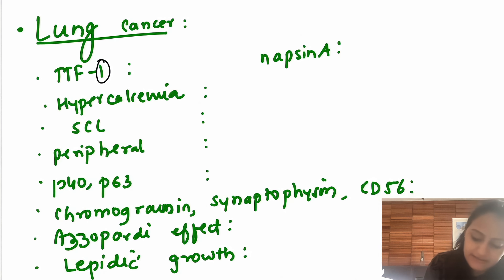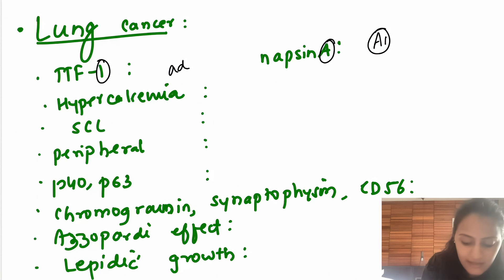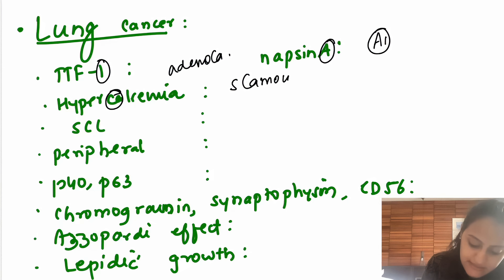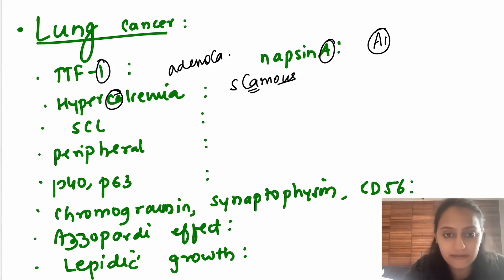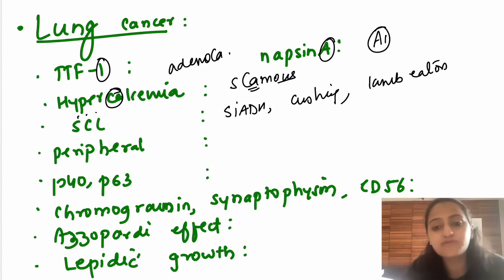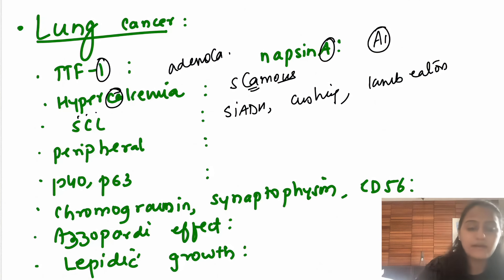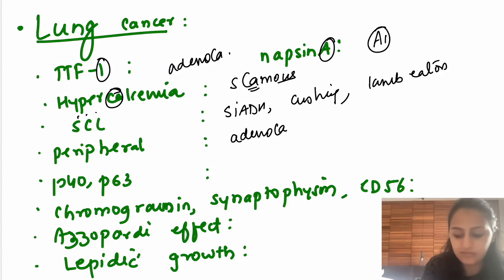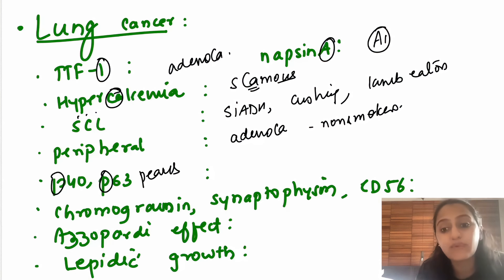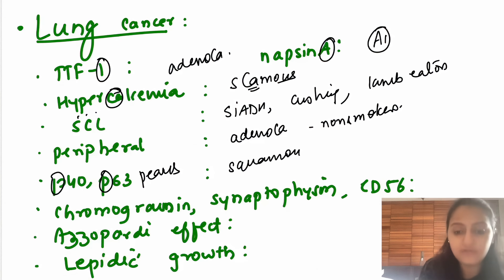For lung cancer: TTF-1 and Napsin A are positive for adenocarcinoma. Hypercalcemia is seen in squamous cell carcinoma of the lungs. Small cell lung cancer (SCLC) is associated with SIADH, Cushing's syndrome, and Lambert-Eaton syndrome — these are paraneoplastic syndromes. Remember squamous cell and small cell are central; adenocarcinoma is peripheral and more common in non-smokers. P40 and P63 are positive in squamous cell carcinoma.